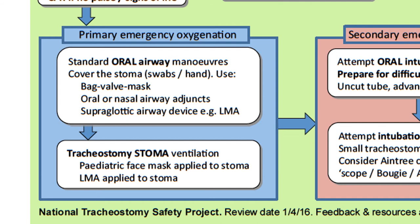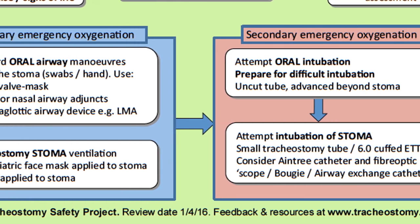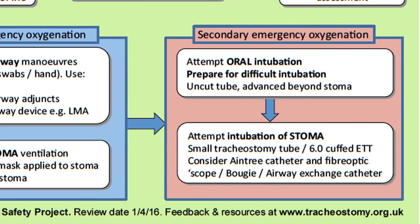If your primary emergency oxygenation techniques don't work, then you will have to proceed to your secondary manoeuvres, which basically involve intubation of one orifice or the other. Oral intubation — expect it to be a difficult intubation, and make sure to use an uncut tube so you can advance the cuff beyond the stoma site. Alternatively, you have the option of intubating via the stoma itself, which you might consider if it is an established tracheostomy or if you know the upper airway is difficult. You will need either a small tracheostomy tube or a size 6 cuffed endotracheal tube. Don't forget, you might want to consider using equipment to aid your intubation, such as an Aintree catheter, fibre optic scope or a bougie.